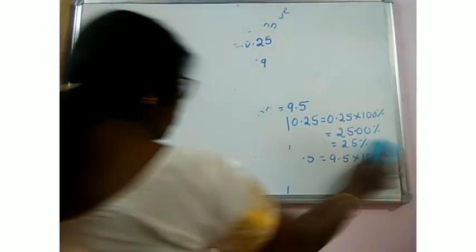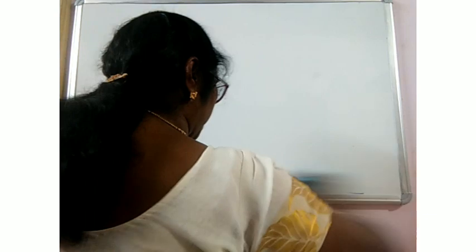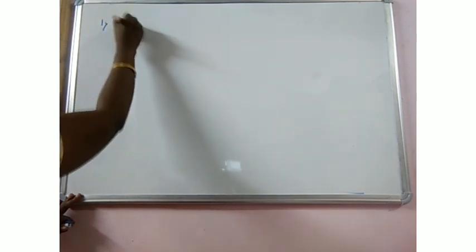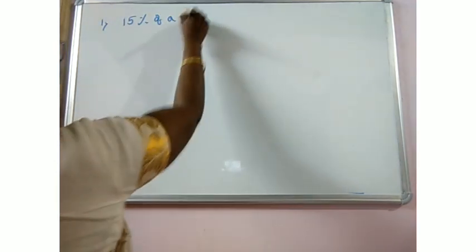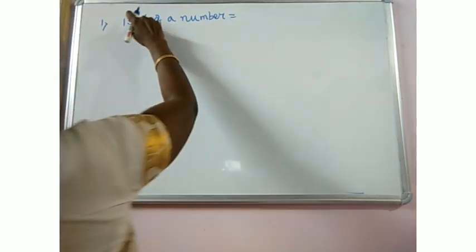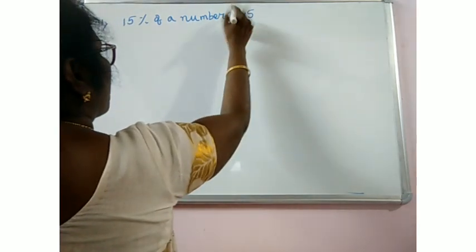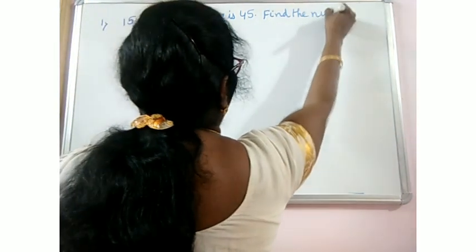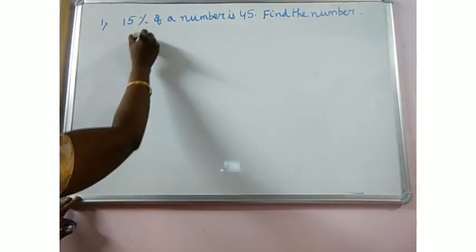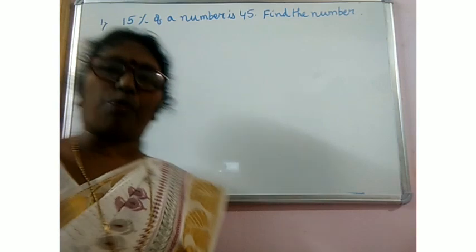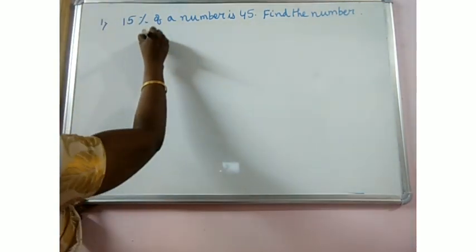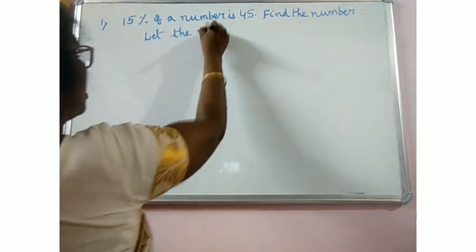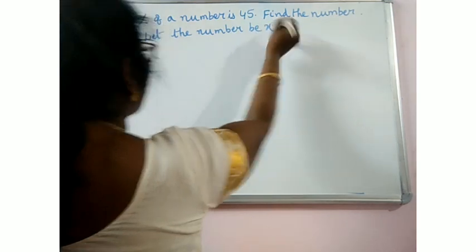Suppose the question is 15% of a number is equal to 45. Find the number. Simple example. We don't know what is the number. If you want to know something, you take it as x. Let the number be x.